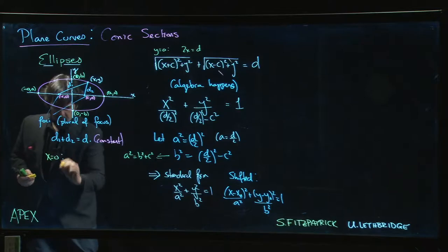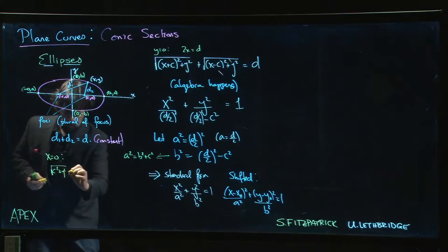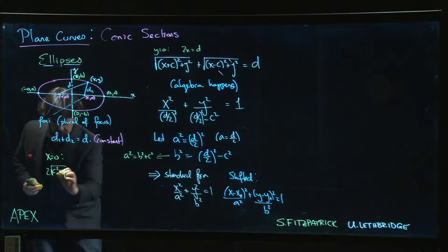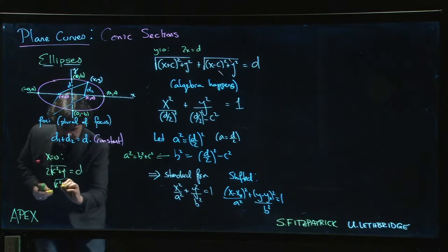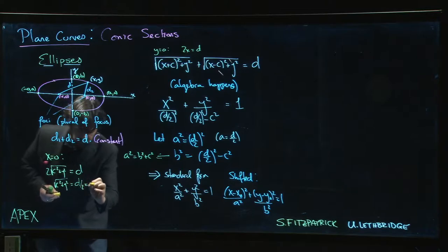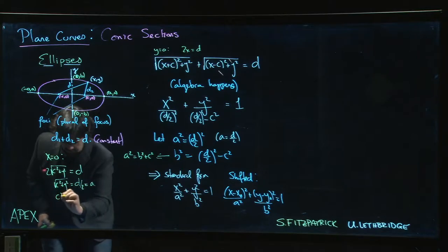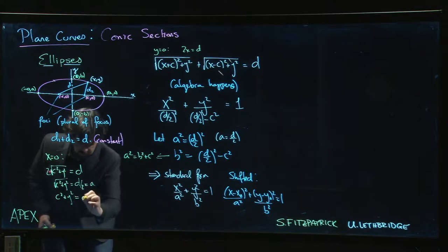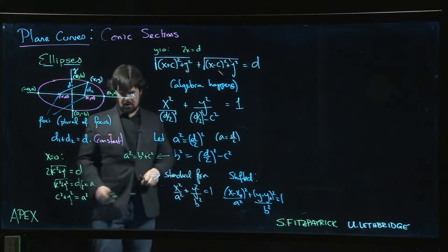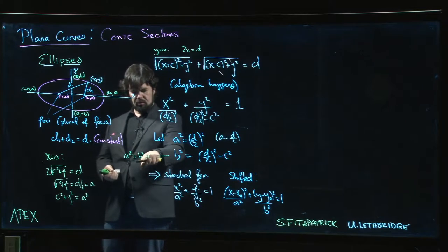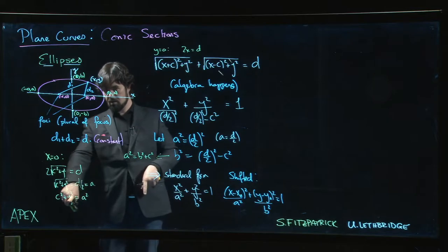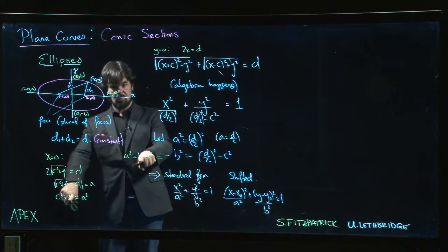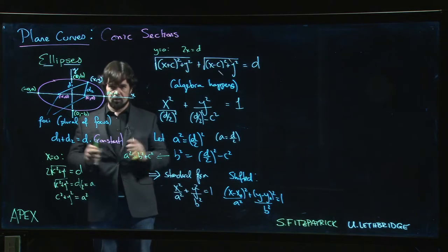And down here is (0, -b). So just so you know where that came from. If x is equal to 0, I get √(c² + y²) + √(c² + y²), I get 2 of those. So 2√(c² + y²) is equal to d. So √(c² + y²) is equal to d/2, which is a. So c² + y² is equal to a². And here we know that a² is equal to b² + c². So a² - c² is b². We can match it up. Y² has to be b². So y has to be plus or minus b. That's how we get those two points.